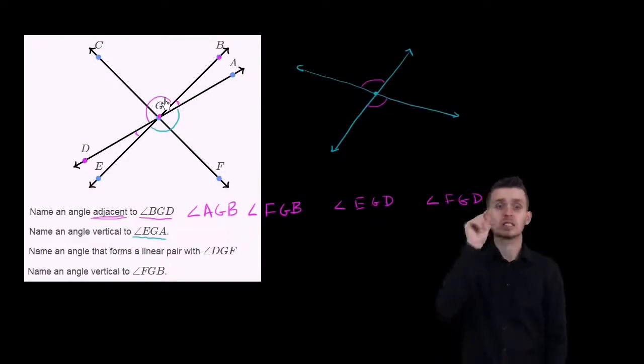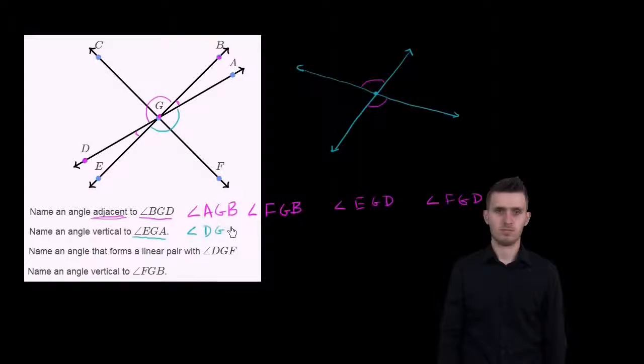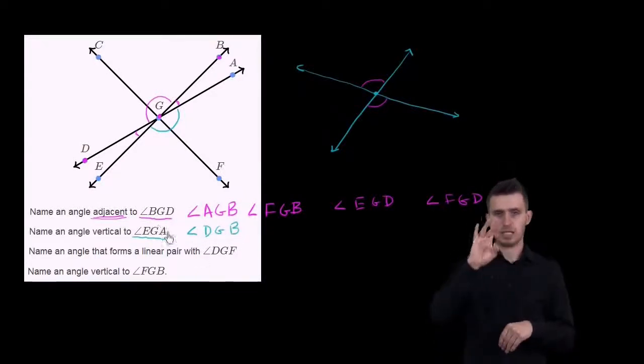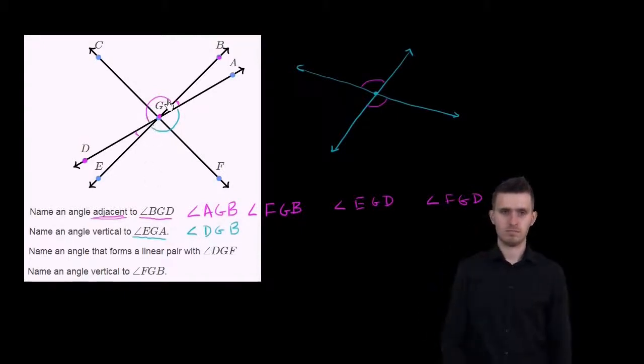then the non-adjacent angle formed to angle EGA is angle DGB - what we already highlighted in magenta right over here. This is angle DGB, which could also be called angle BGD. These both refer to this angle up here.